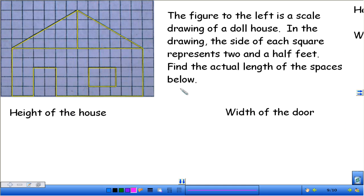All right, the next part of scale drawings is if I give you a picture, you need to be able to count units and figure out some lengths. So let's read this one together. It says, the figure to the left is a scale drawing of a dollhouse. In the drawing, the side of each square represents 2 and a half feet. Find the actual length of these spaces below. So the height of the house and the width of the door. I want to know the actual lengths of these. But first we need to write this in a scale.